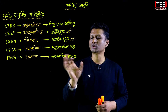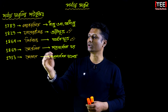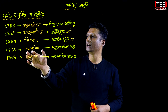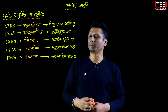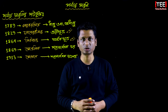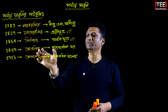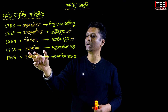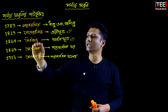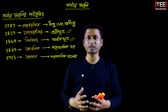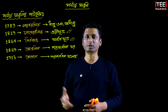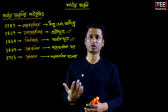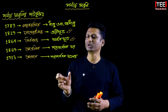তো পারমাণবিক সংখ্যা অনুযায়ী যে নতুন সাজান হয় এবং পারমাণবিক ভর অনুযায়ী যখন মৌলগুলোকে সাজিয়ে তৈরি করা হয় তখন পারমাণবিক ভর আবিষ্কৃত হয়েছিল কিন্তু পারমাণবিক সংখ্যা আবিষ্কৃত হয়নি বিধায় মেন্ডেলিফ পারমাণবিক ভর অনুযায়ী মৌলগুলোকে সাজিয়েছিলেন। কিন্তু অনেক ক্ষেত্রে তিনি অনেক বেশি কিন্তু মেন্ডেলিফের আলোচনা তার মতে ওই চার্টে মৌলের জায়গা ফাঁকা যায়।